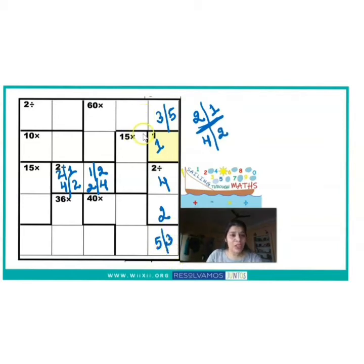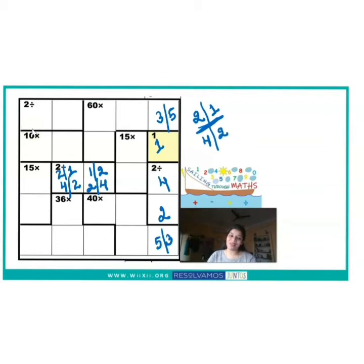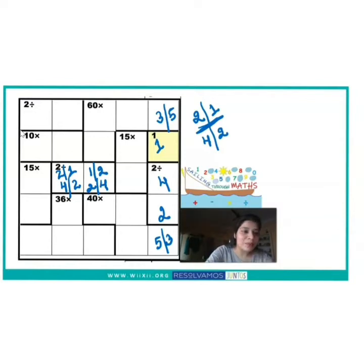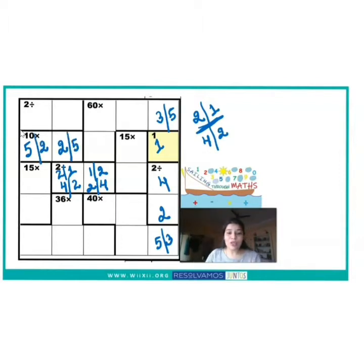Now let's move on to the second row. Here we have to find two numbers which when multiplied together give 10. What are the possible two numbers between 1 to 5 that multiply to give 10? The only two possible numbers are 5 and 2. So either 5 comes in one block and 2 in the adjacent block, or 2 comes first and 5 comes second.